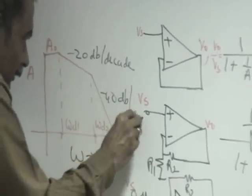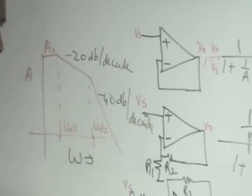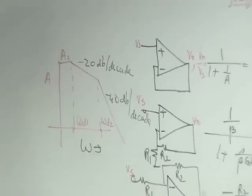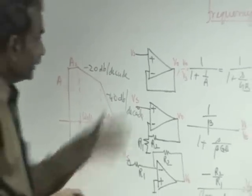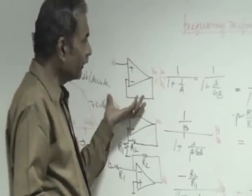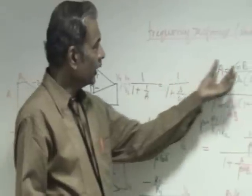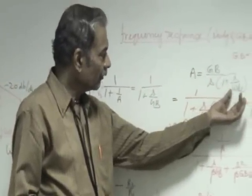It falls off at 40 decibels per decade due to the second pole at this. In this experiment we are obtaining the frequency response of the feedback amplifier with both gain bandwidth product and the second pole taken into account.